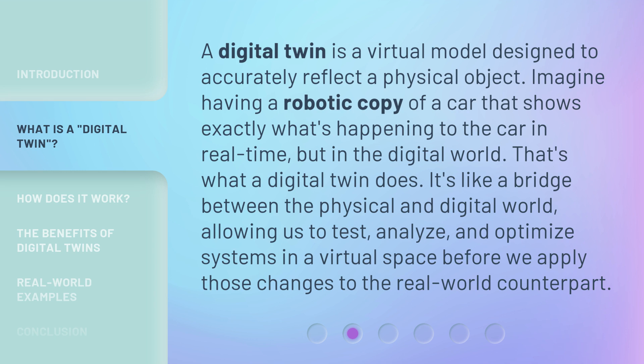A digital twin is a virtual model designed to accurately reflect a physical object. Imagine having a robotic copy of a car that shows exactly what's happening to the car in real time, but in the digital world. That's what a digital twin does. It's like a bridge between the physical and digital world, allowing us to test, analyze, and optimize systems in a virtual space before we apply those changes to the real-world counterpart.